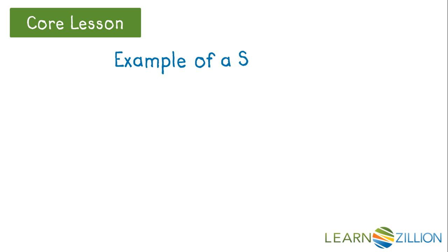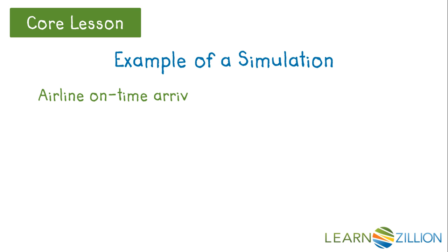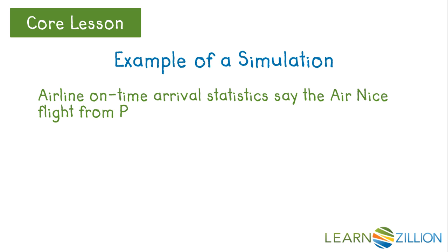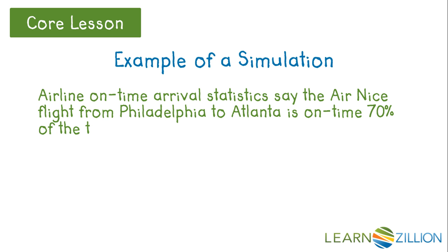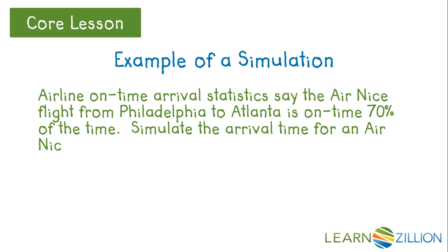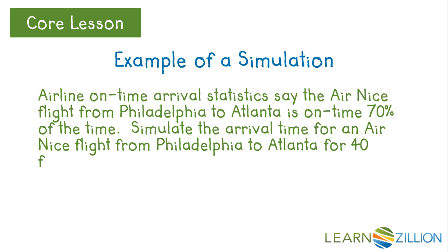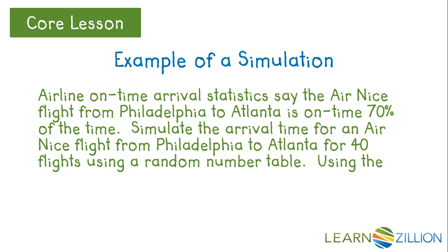Let's look at an example of a simulation. Airline on-time arrival statistics say the Air Nice flight from Philadelphia to Atlanta is on-time 70% of the time. Simulate the air arrival time for an Air Nice flight from Philadelphia to Atlanta for 40 flights using a random number table. Using the digits, how would you design the simulation?